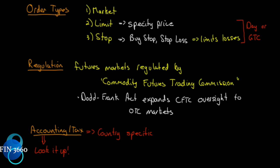These stops are meant to limit your losses and are typically entered at the time of your limit order. For example, you might buy a contract at $40 per unit with a stop loss at $39.20 or $39.50, depending on your tolerance. Limit orders and stop orders can be set as either day orders — which is the default — or good-till-cancelled. Market orders don't have this modifier because they execute immediately, so there's no concept of day or GTC.